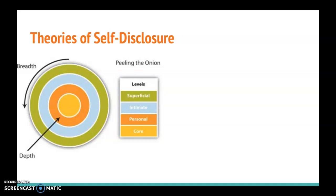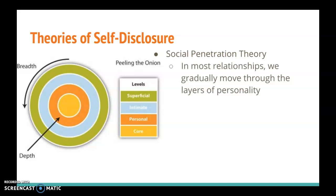We're going to talk about three different theories of self-disclosure in this chapter. The first of these theories is social penetration theory, which is sometimes referred to as the onion theory. This theory states that in most relationships we gradually move through the layers of each other's personality like we peel the layers away from an onion. And as we get to know someone, we tend to engage in this reciprocal process of self-disclosure that changes in breadth and depth and affects how the relationship develops.